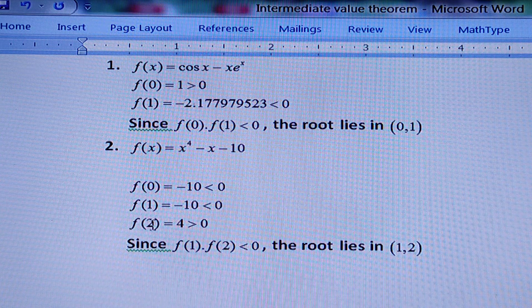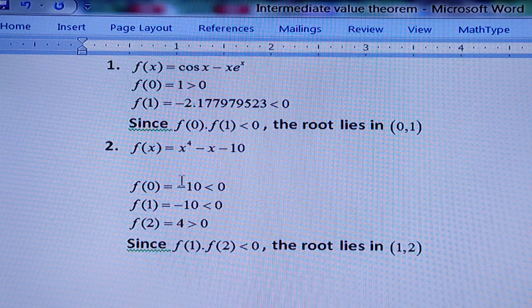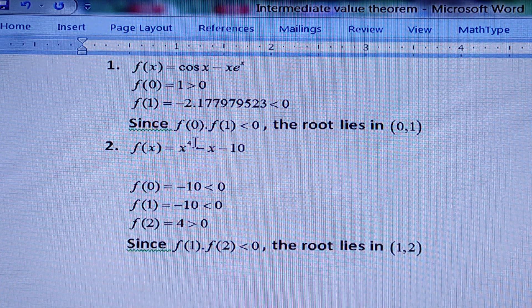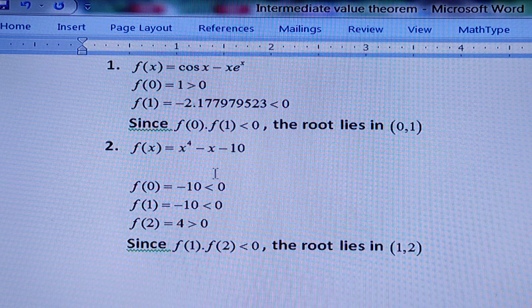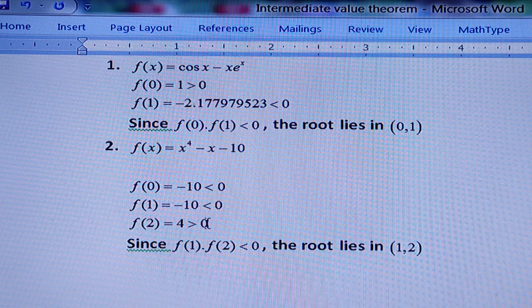Then put x = 2, that means f(2). It will be equal to 2 to the power of 4, which is 16, minus 2, minus 10. So it will be 4, and 4 is greater than 0.